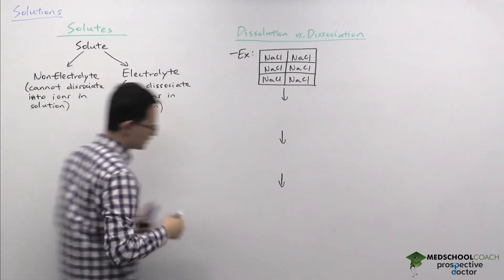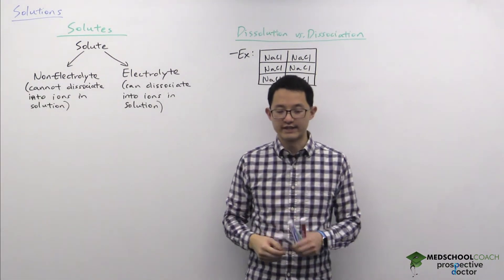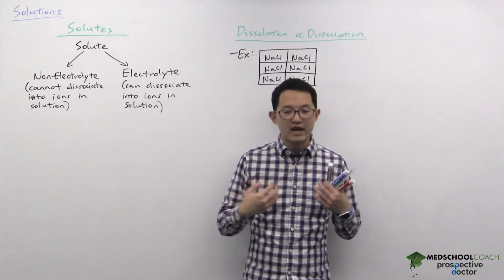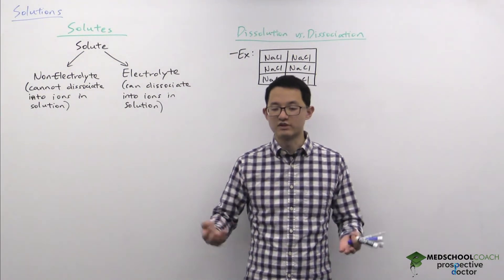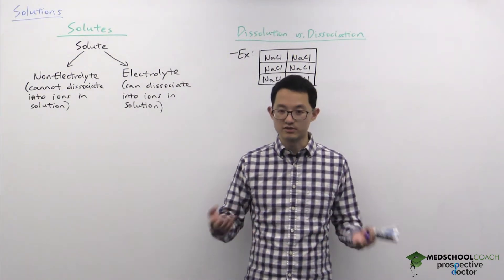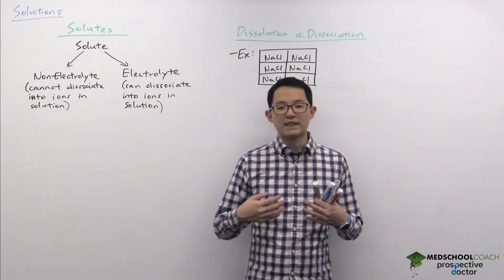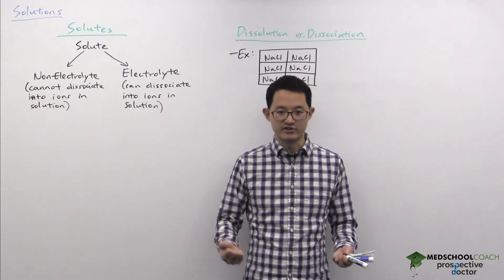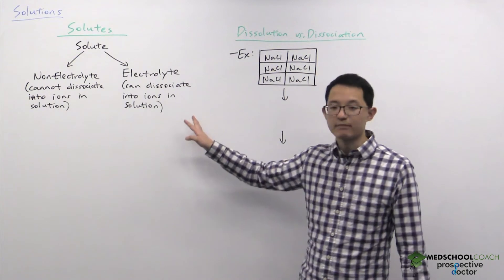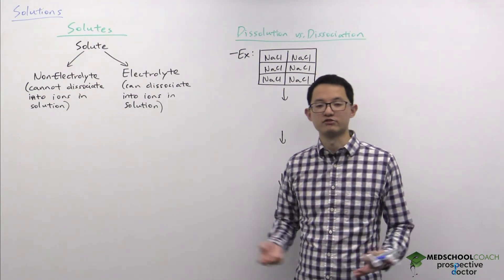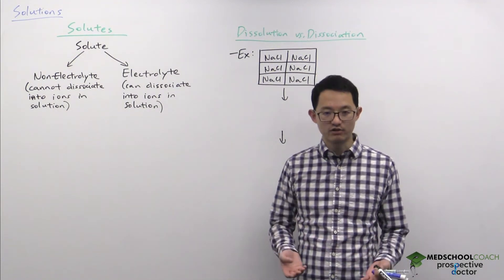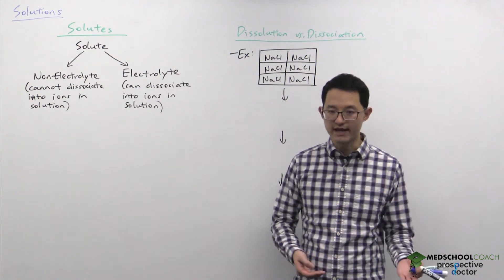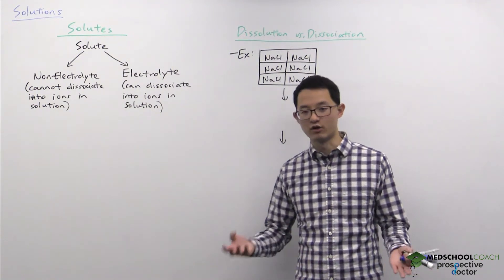A good example of a non-electrolyte is glucose — sugar. We can dissolve lots of glucose in sweet beverages, but glucose cannot dissociate into ions in solution. A good example of an electrolyte is table salt, sodium chloride. Sodium chloride can dissociate into sodium cations and chloride anions in water.